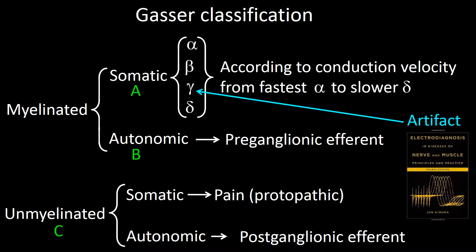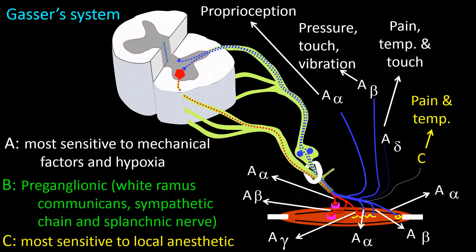This classification was addressed in the prior video devoted to cutaneous stimulation. Type A fibers — myelinated and especially the most myelinated, that is the type A alpha and beta fibers — are very sensitive to pressure, stretching, and hypoxia, whereas C fibers are most sensitive to local anesthetics. B fibers are present only in humans in preganglionic elements of the sympathetic nervous system.